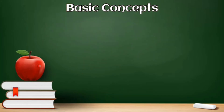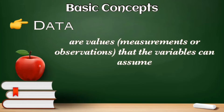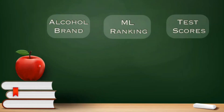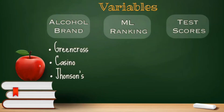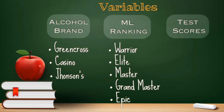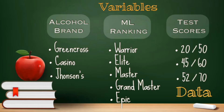Data are facts and figures collected, analyzed, and summarized for presentation and interpretation. So if your variable is alcohol brand, the possible data are Green Cross, Cansao, or Johnson. If your variable is ML ranking, the possible data are Warrior, Elite, Master, Grandmaster, Epic, and so on.